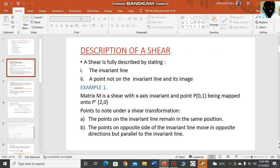A shear is described fully by stating one, the invariant line, and a point not on the invariant line and its image—how that point is moved to its image. For example, we may be given a matrix M which is a shear with x-axis invariant and a point P(0,1) to be mapped onto point P prime. We note the points on the invariant line remain in the same position, and points on opposite sides of the invariant line move in opposite directions but parallel to the invariant line.